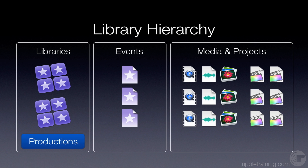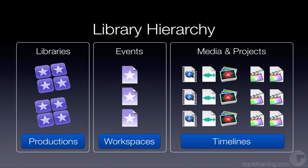You can think of your libraries as self-contained production units. Those productions contain workspaces, which are the events. And then within those workspaces, you'll add the timelines — your actual work itself, your edit decisions, the sum total of everything you create in terms of your final movie. All the media associated with that edit and the project itself lives in the event. So you can clearly see the progression: libraries contain events, which contain projects.